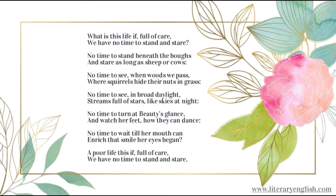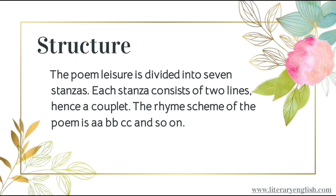A poor life this is, full of care, we have no time to stand and stare. Now as we can see, the poem Leisure is divided into seven stanzas, each stanza consists of two lines, hence a couplet. The rhyme scheme of the poem is AA BB CC and so on.